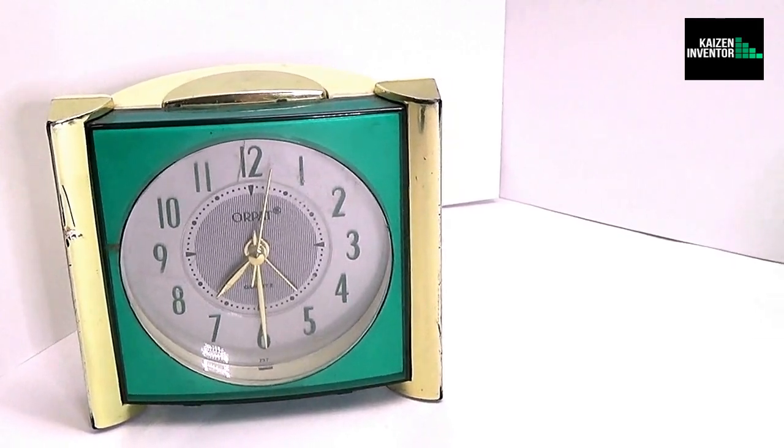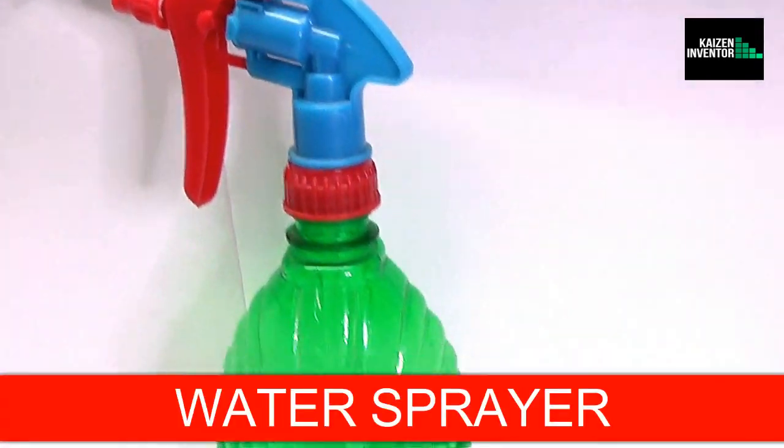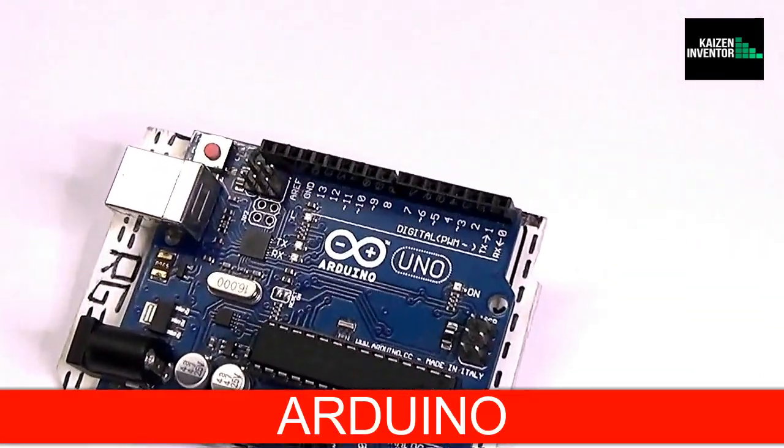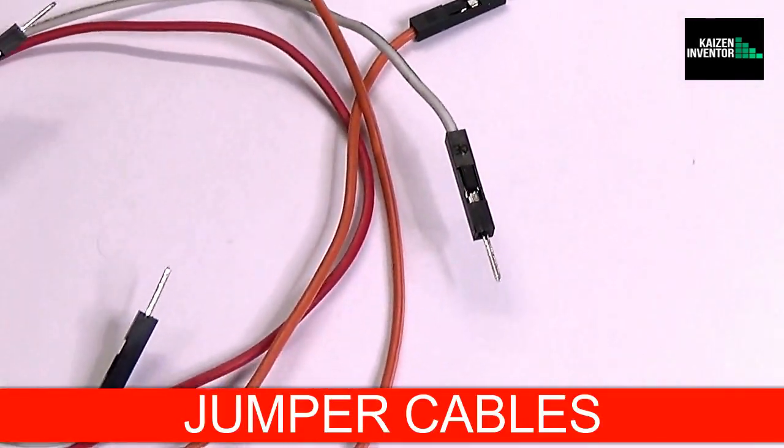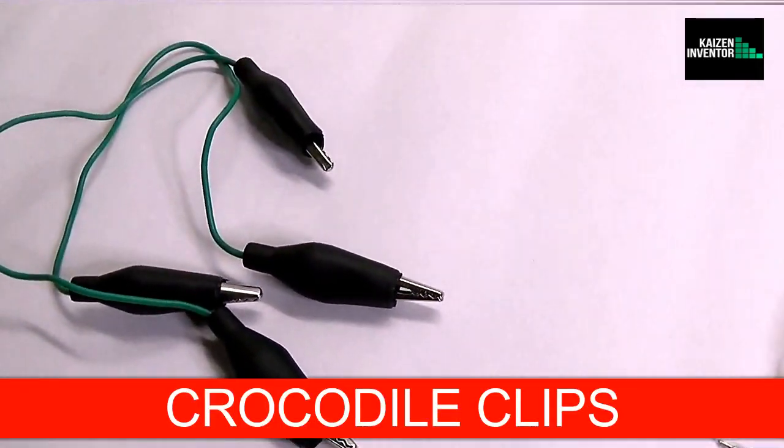Components are a clock, a spray bottle, the heart of this project which is an Arduino, a 9 gram servo motor, some jumper cables, and a couple of crocodile clips.